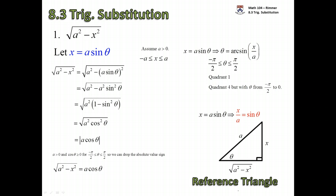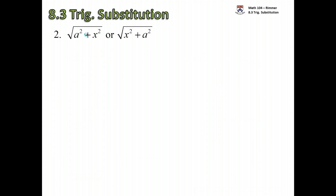That's the first type of substitution: let x = a·sin(θ) when you have integrals involving a squared minus x squared under a square root. Next up is a squared plus x squared, and the substitution that will help here is letting x equal a·tan(θ), assuming once again that a is positive.